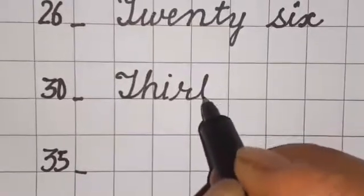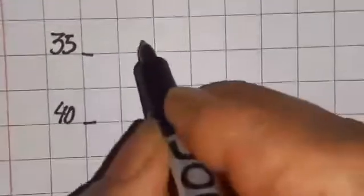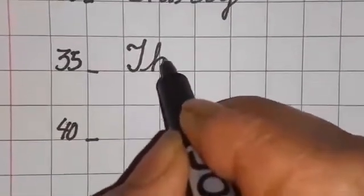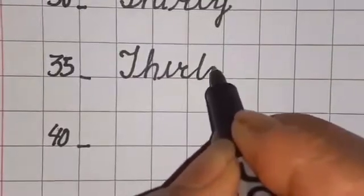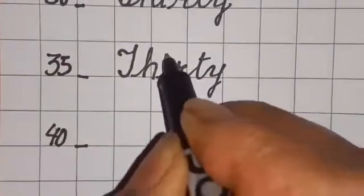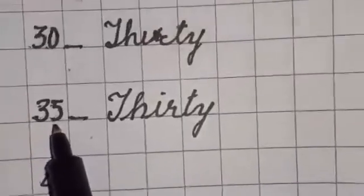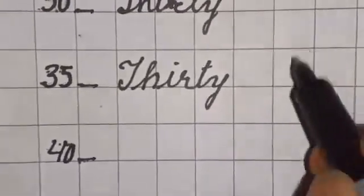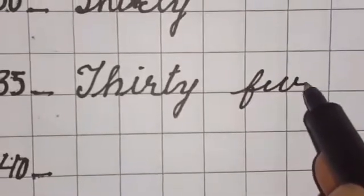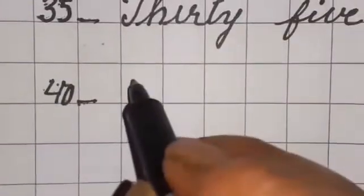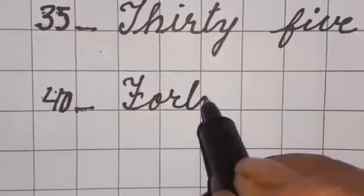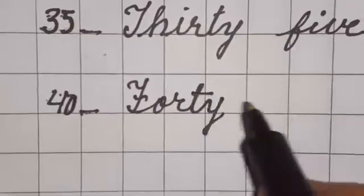And next one is thirty-five. And next number is forty: F-O-R-T-Y, forty. Thirty-five: T-H-I-R-T-Y, thirty, F-I-V-E, five.